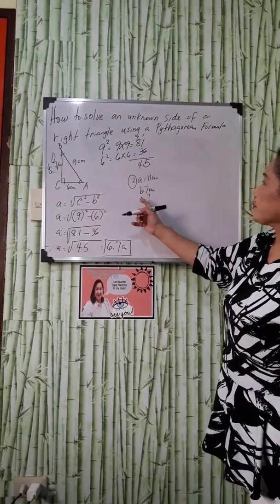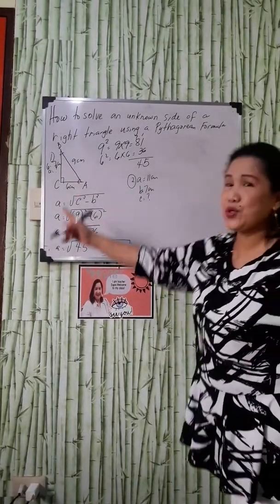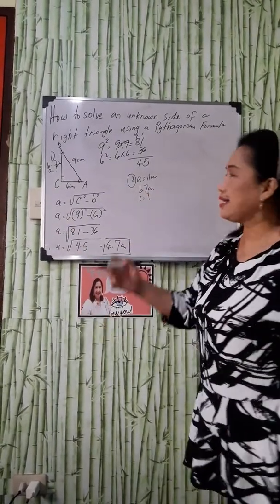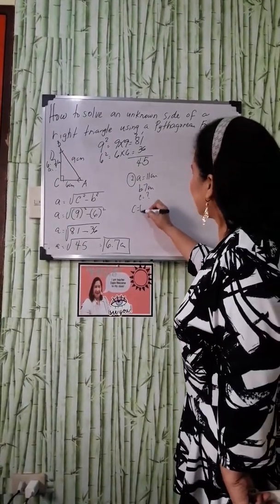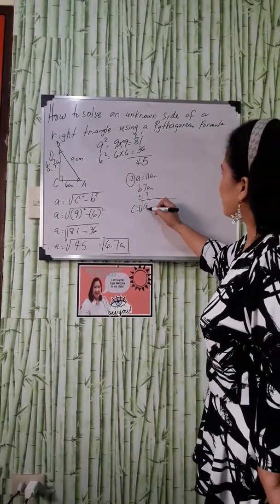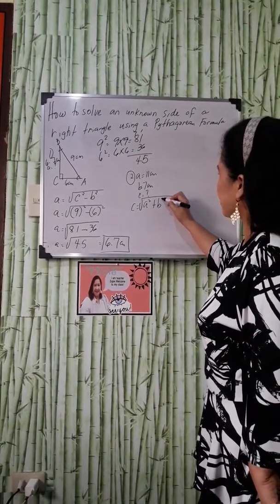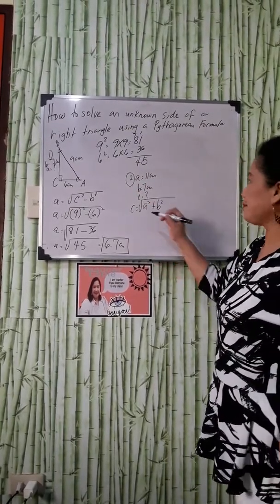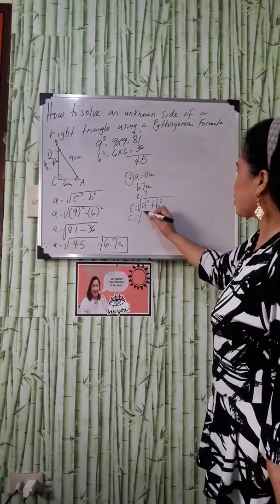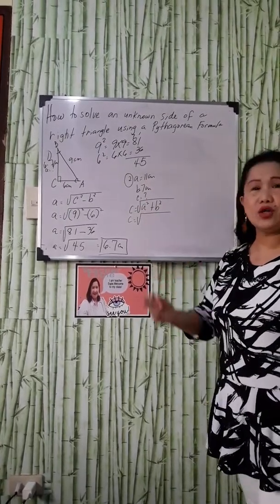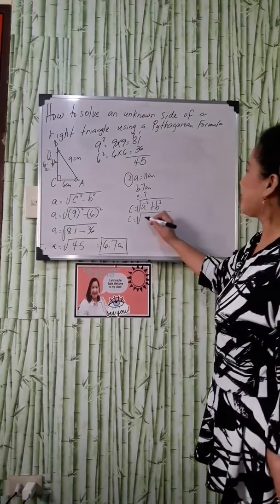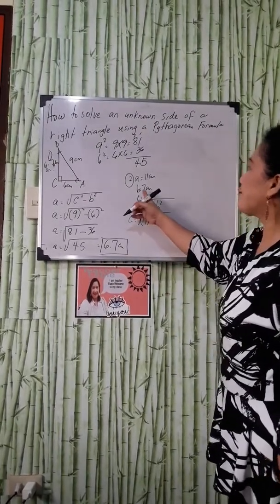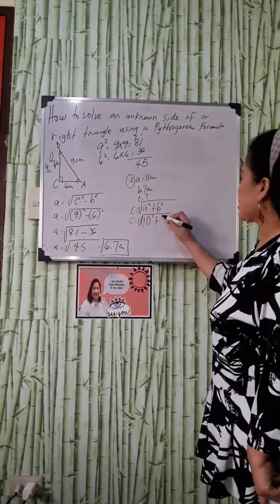Side C, we have to use the Pythagorean formula. Last time, we studied that C is equal to the square root of A squared plus B squared. We are going now to substitute the given. C is equal to the square root of what is the value of our side A? That is 11 squared plus the value of B, which is 7 squared.